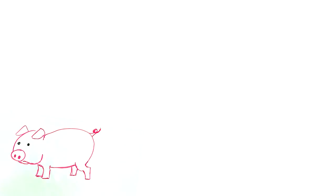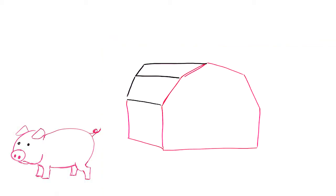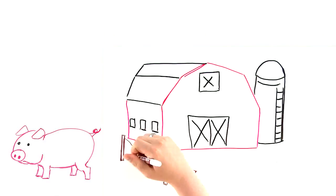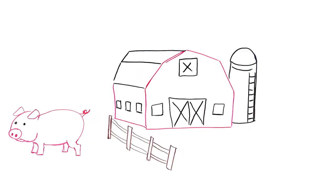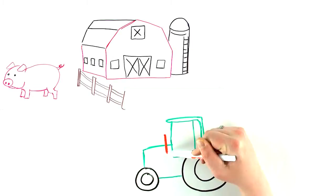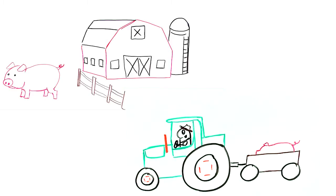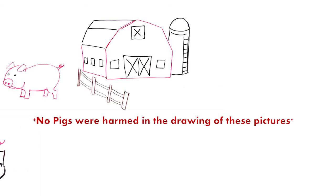How was that farmer able to buy a farm in the first place? He had to borrow money. No bank would lend him anything unless he could prove the farm buildings were insured, so he had to have property insurance. What about the vehicles on the farm? He needs insurance for those, especially if he transports his pigs to the processing plant where the baloney is made. No pigs were harmed in the drawing of these pictures.